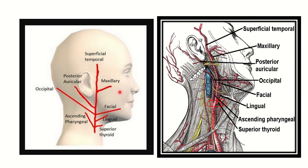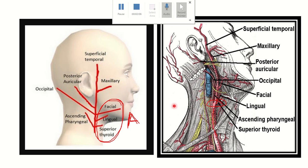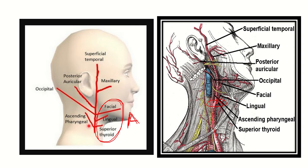We can see the total eight branches of the external carotid artery. The first branch is the superior thyroid artery, then lingual, then facial. These three are located anteriorly, so they are the anterior branches. An important question is: what is the first branch of the external carotid artery? From this picture, we can see the superior thyroid artery is the first branch.